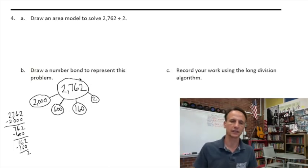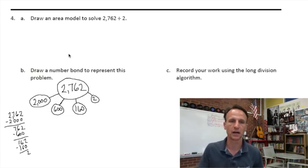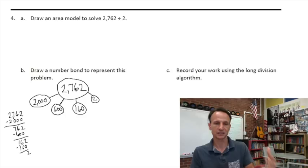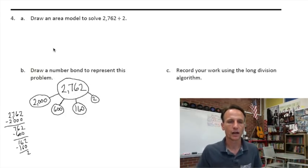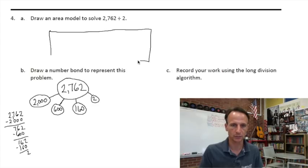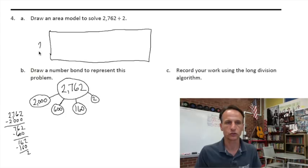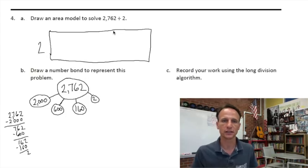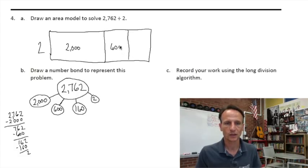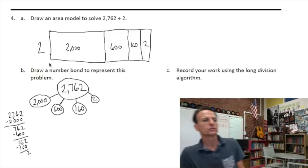Now that we did the number bond first, drawing the area model will be easy. We could have done this differently — made 2000 into 1000 and 1000, or handled 700 differently — but this is what made sense and it works. Let's draw a nice generous-sized rectangle since we have lots to put inside it. We're dividing by two, so that's our length. Largest partition is 2000, then 600, then 160, then 2 — not to scale at all!